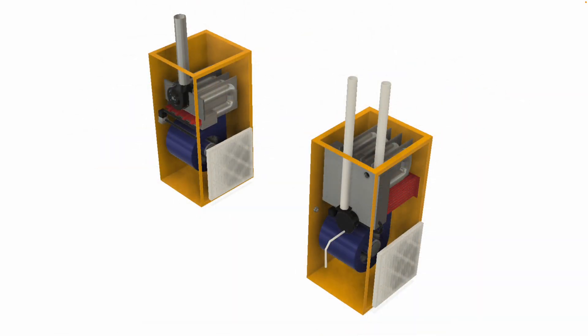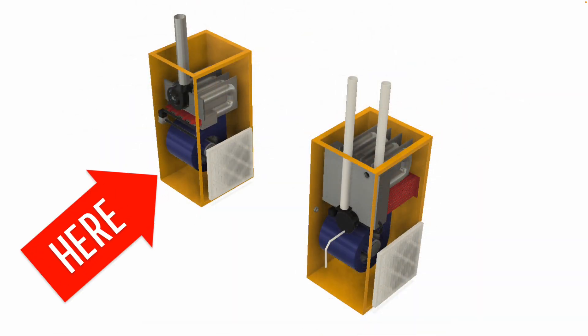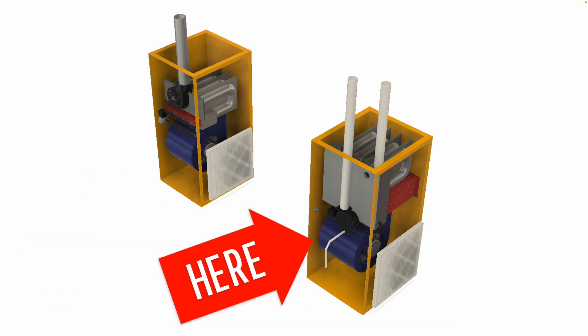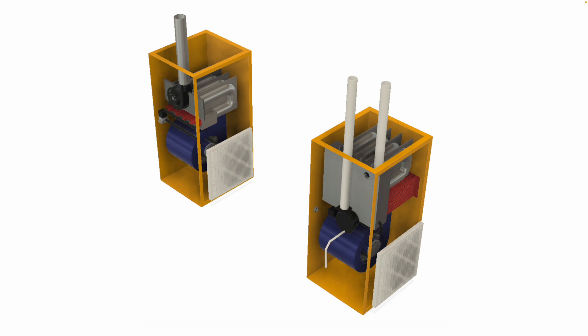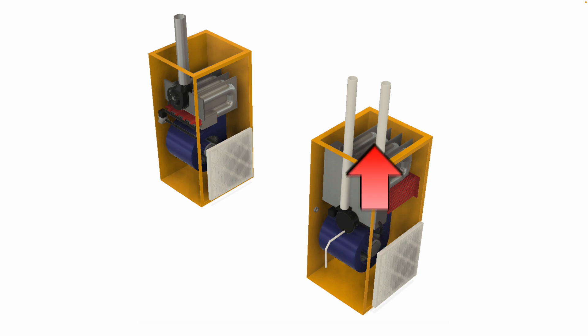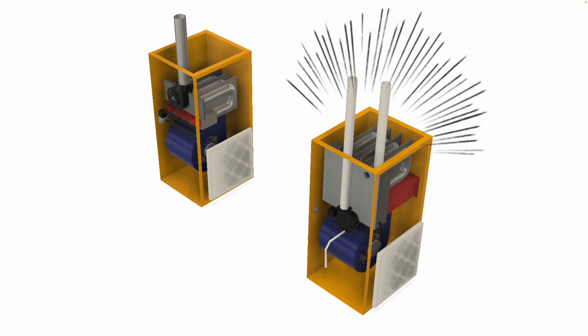Here we'll compare a standard efficiency furnace on the left to a high efficiency furnace on the right. The basic operation at a very basic level is exactly the same — the air gets sucked in through the filter on both units, through the blower motor, and the blower motor then blows the air up through the heat exchanger, and that warmed air gets distributed out through your house through the registers.